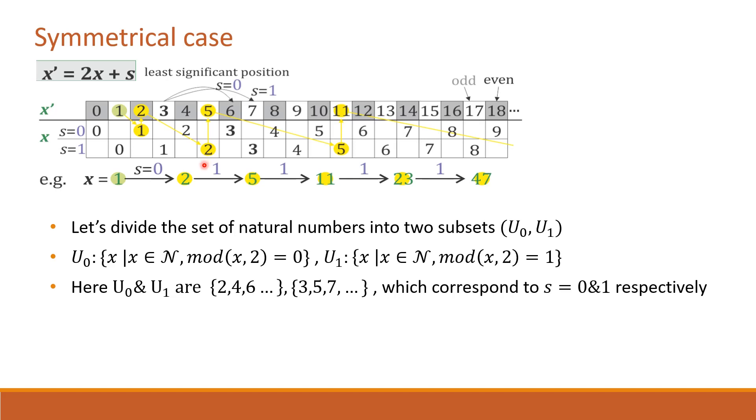Now let us consider the example of encoding the sequence 011111. As discussed, we start with the initial state of x equal to 1 and we have to update x to x-th appearance of s. Encountering 0, x equal to 1 is updated to x-th appearance of 0. Here it is the first appearance of 0, that is 2. So 1 is updated to 2.